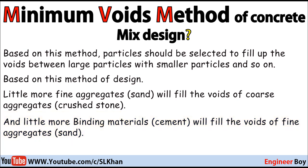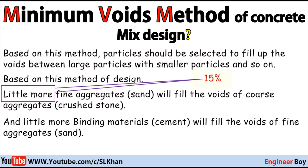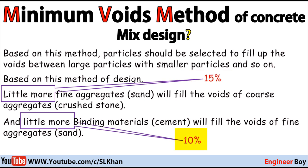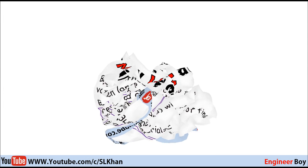This is the basic concept of the minimum voids method. The extra fine aggregate must be 15% more, and the extra binding material is 10% only. I hope you understand the basic concept of the minimum voids method of concrete mix design. Now I'll come directly into an example to understand the problem better.